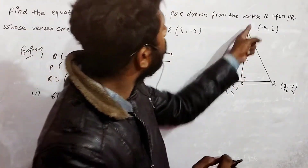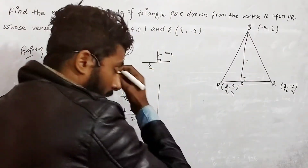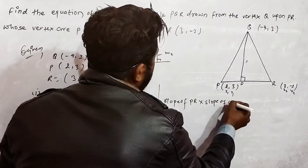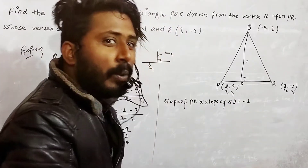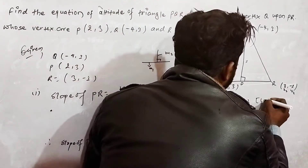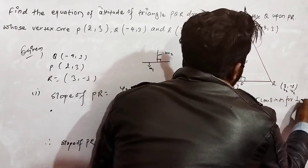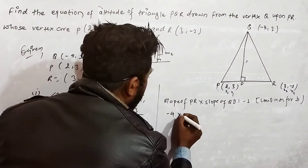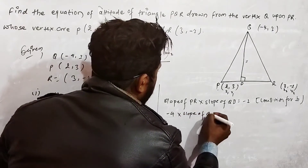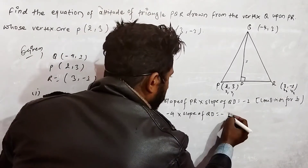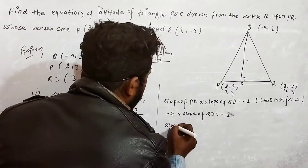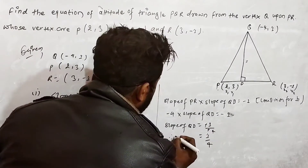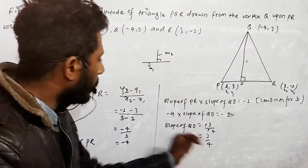Now we apply the perpendicular line condition: slope of PR multiplied by slope of QD is equal to minus 1. Slope of PR is minus 4. So minus 4 into slope of QD equals minus 1. Dividing, slope of QD equals minus 1 divided by minus 4, which is 1/4. Therefore, the slope m equals 1/4.